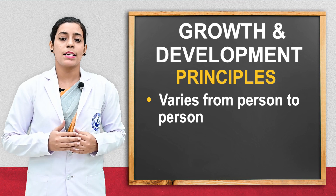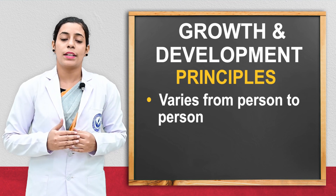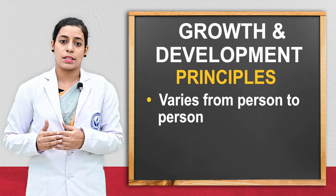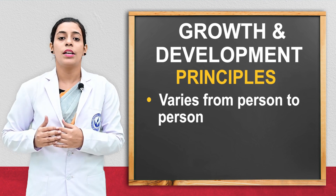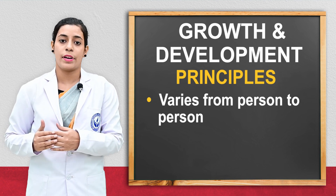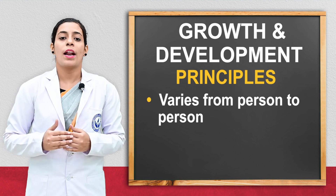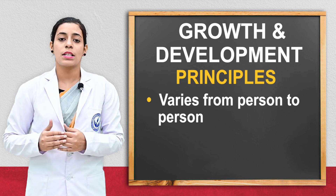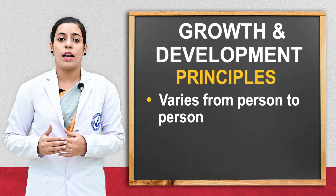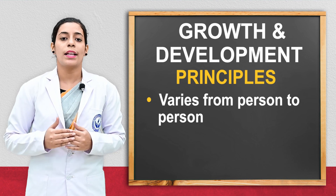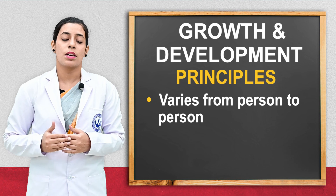The next principle is that there are individual differences. Every child has individual differences because of genetic material or other factors — every child has a different shape, different color, and different genes, so there are differences between individuals.